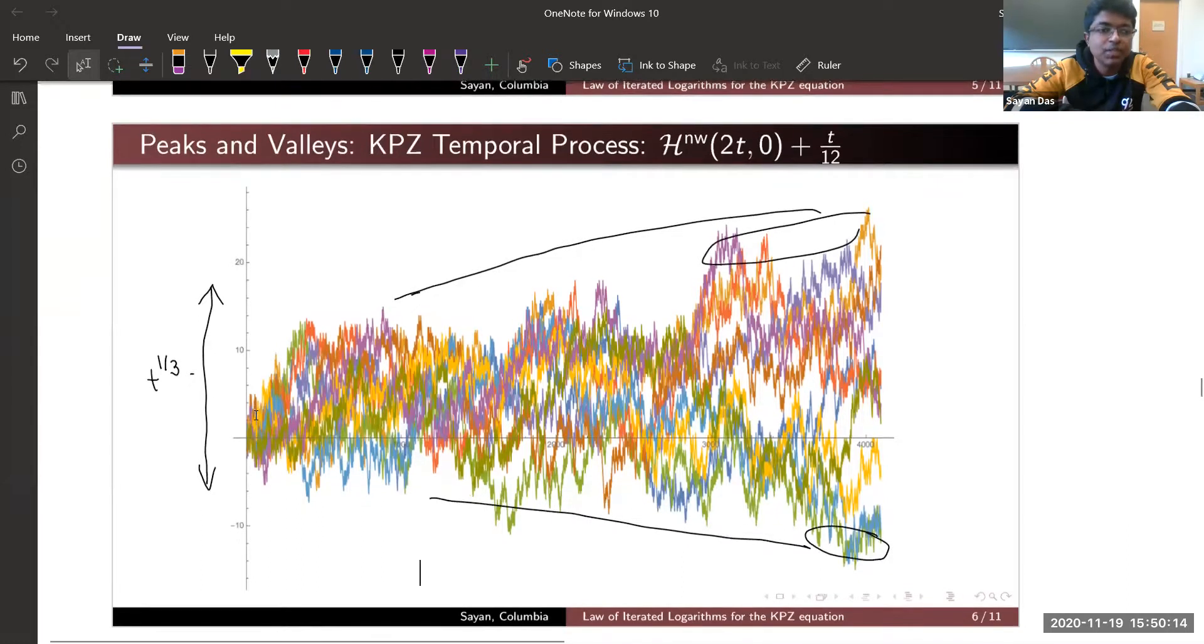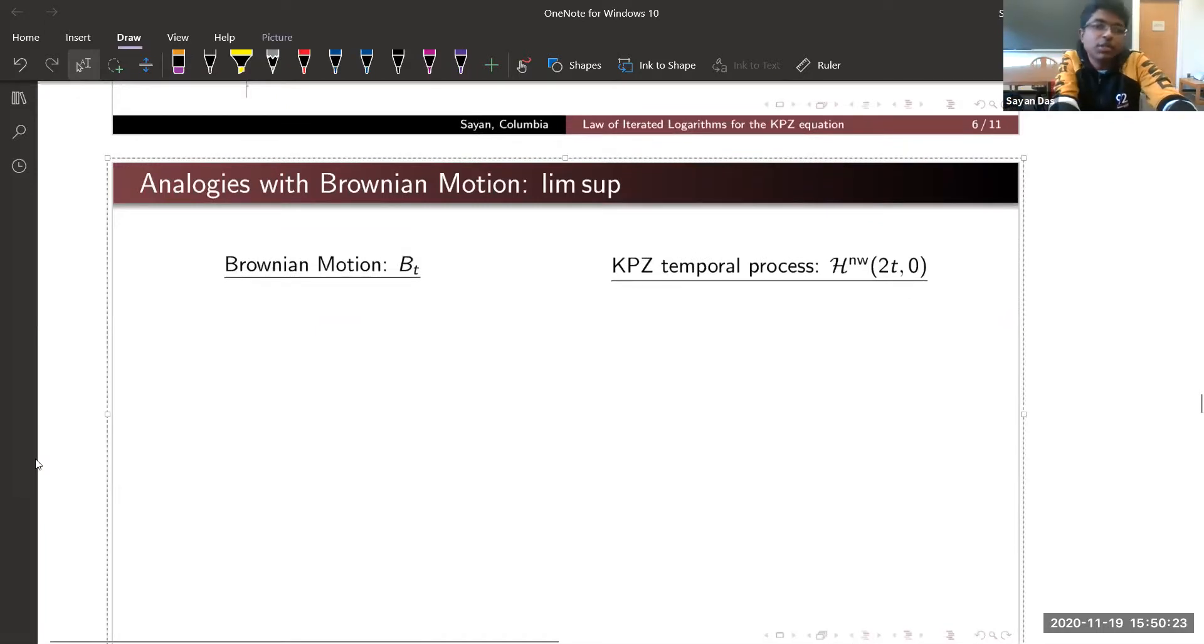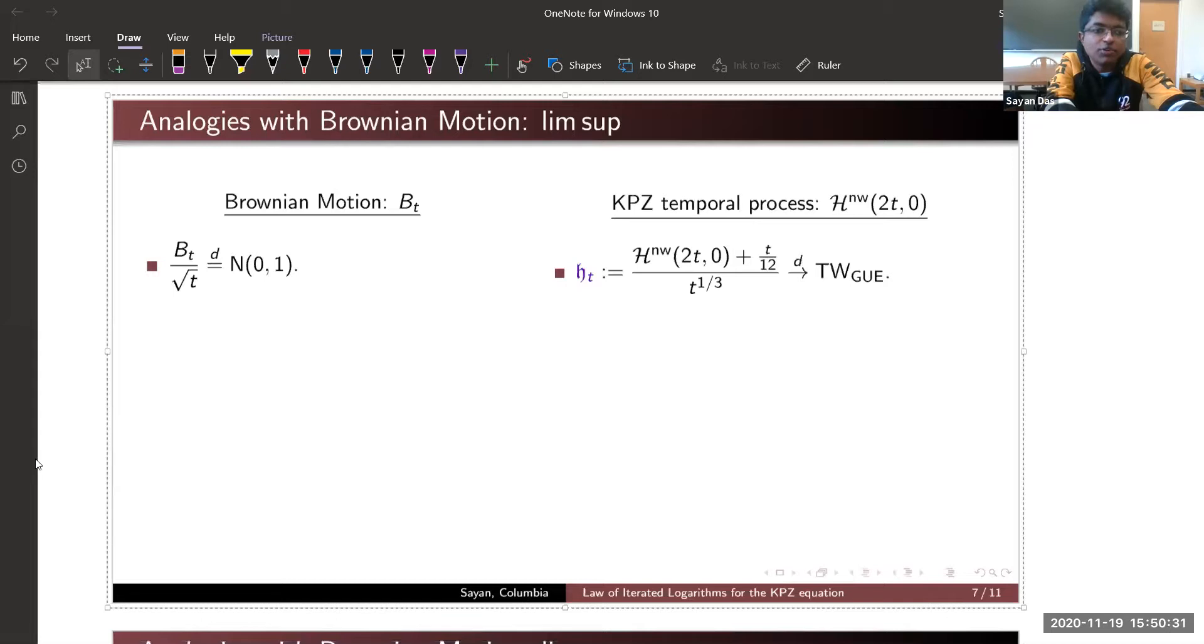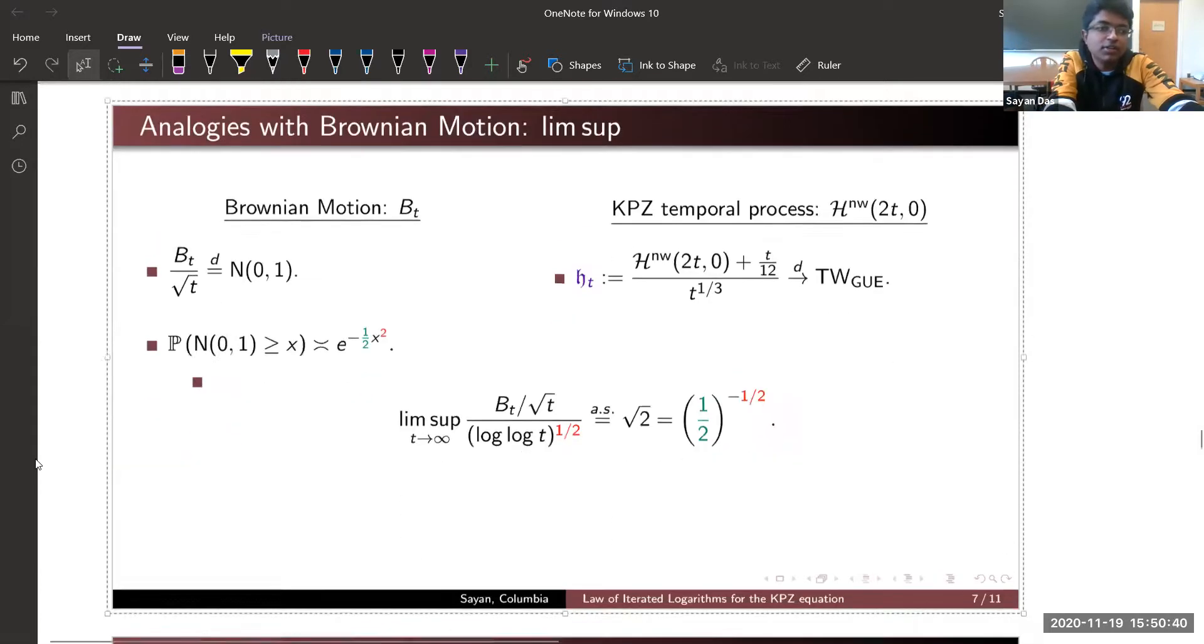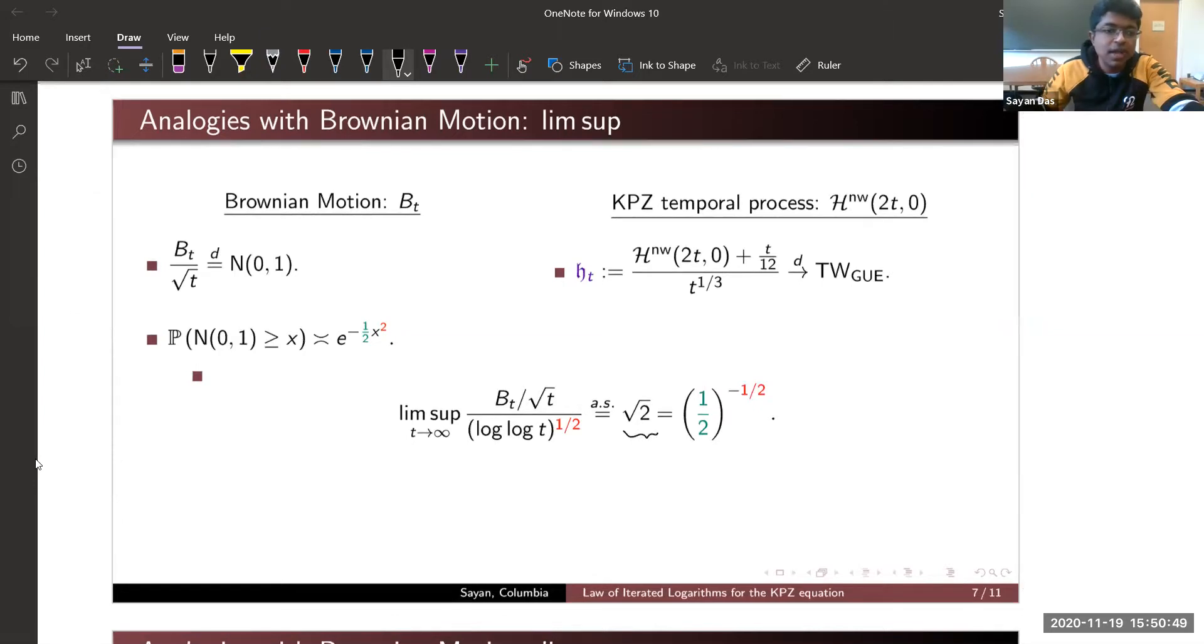I will compare with Brownian motion again and again. Brownian motion has normal Gaussian fluctuation whereas H_t process has limiting Tracy-Widem fluctuations. In the law of iterated logarithm for Brownian motion, the red halves come essentially because the Gaussian tail has a quadratic exponent, so the two reverses to one half, and this green half comes because it has a pre-factor of half sitting here.